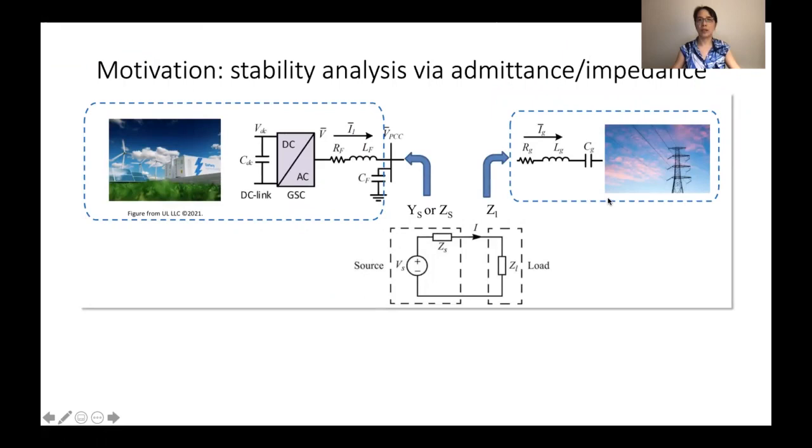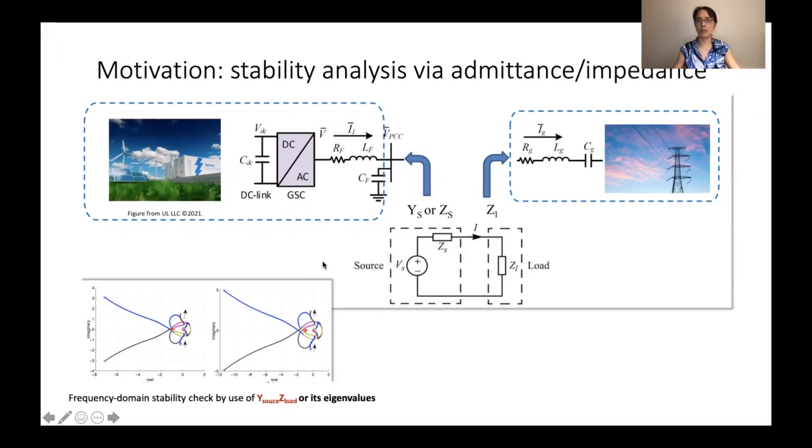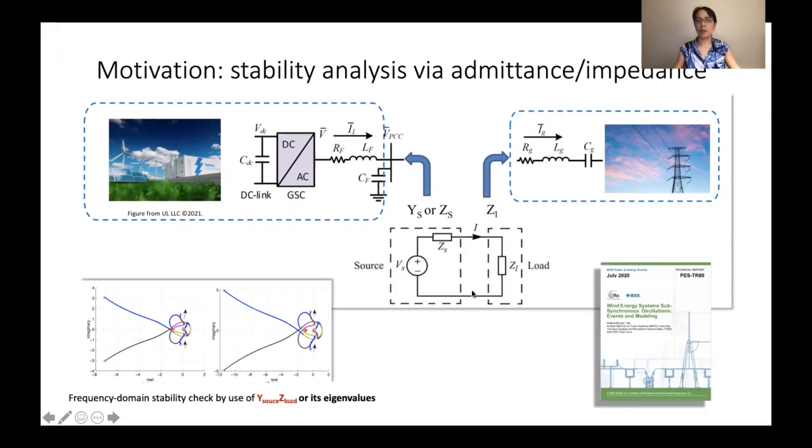First, why do we need admittance? For power grid, we usually like to do stability analysis and we can split a system through a bus and looking at the system from left and right as two components, and each can be impedance or admittance. With that, we have the frequency domain response. We can conduct stability analysis using Nyquist plot or Bode plot, these kind of criteria. And this method has been widely used in power grid industry.